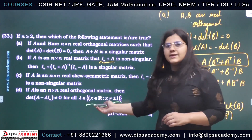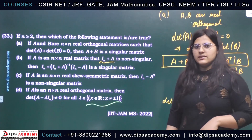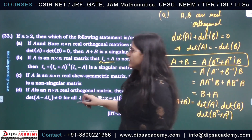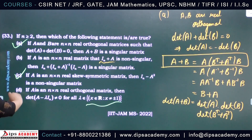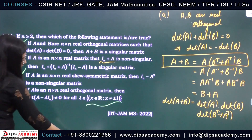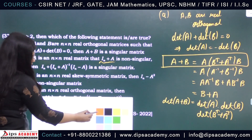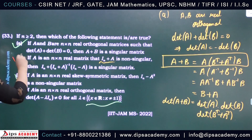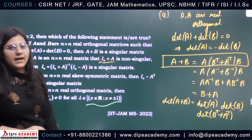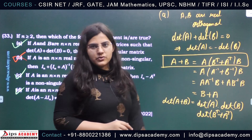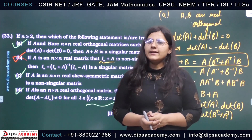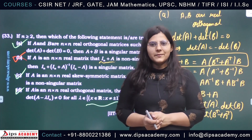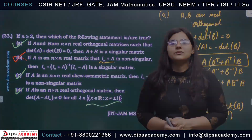Therefore option D is also correct. So out of the four options, A, C, and D are correct while option B is incorrect. I hope you have understood the question. Thank you so much for watching the video. For any queries, you can comment in the comment section. Thank you.